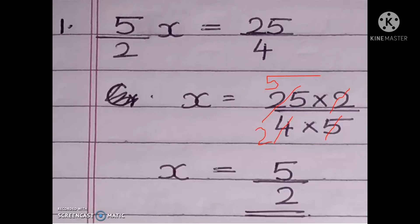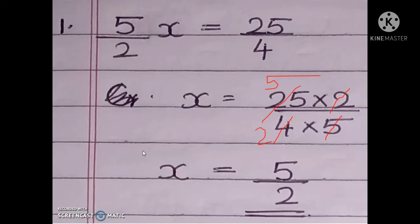So for 5 by 2 x equal to 25 by 4: when you take 5 by 2 to the other side, it becomes divided by 5 by 2. Divided by 5 by 2 is the same as multiplication by its reciprocal, that is why I wrote into 2 by 5. Then I reduced the operation and got the final answer as 5 by 2.